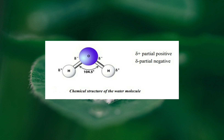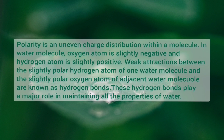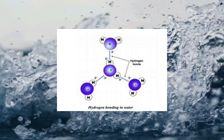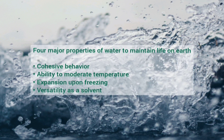The water molecule is a small, polar, and angular molecule. Polarity is an uneven charge distribution within a molecule. In the water molecule, the oxygen atom is slightly negative and the hydrogen atom is slightly positive. Weak attractions between the slightly polar hydrogen atom of one water molecule and the slightly polar oxygen atom of an adjacent water molecule are known as hydrogen bonds. These hydrogen bonds play a major role in maintaining all the properties of water. When water is in liquid form, its hydrogen bonds are very fragile — they form, break, and reform with great frequency.